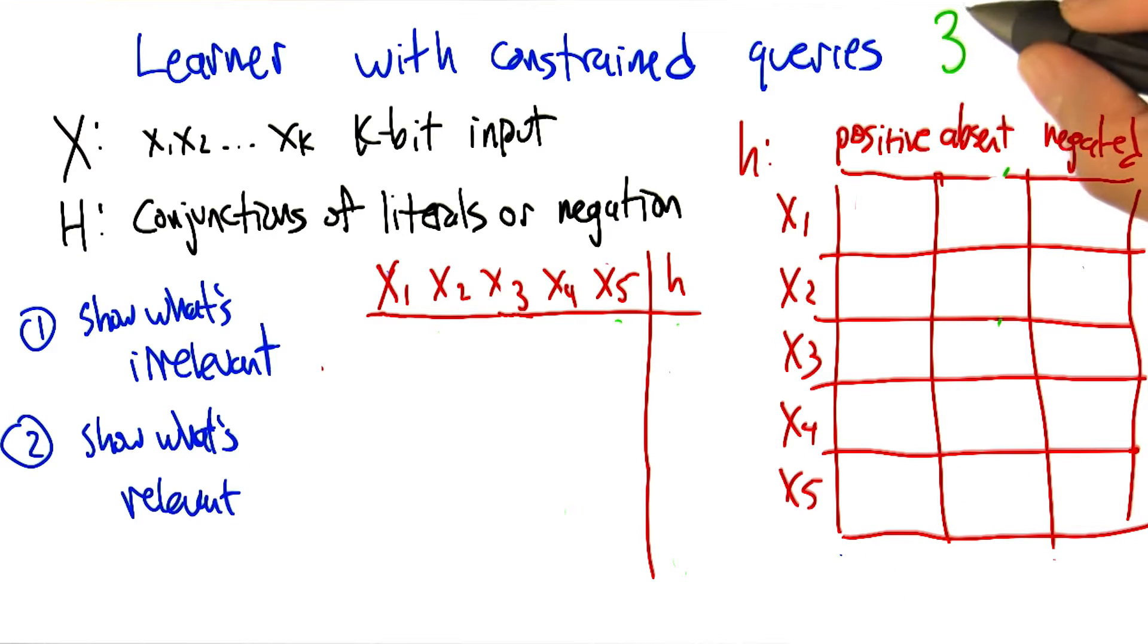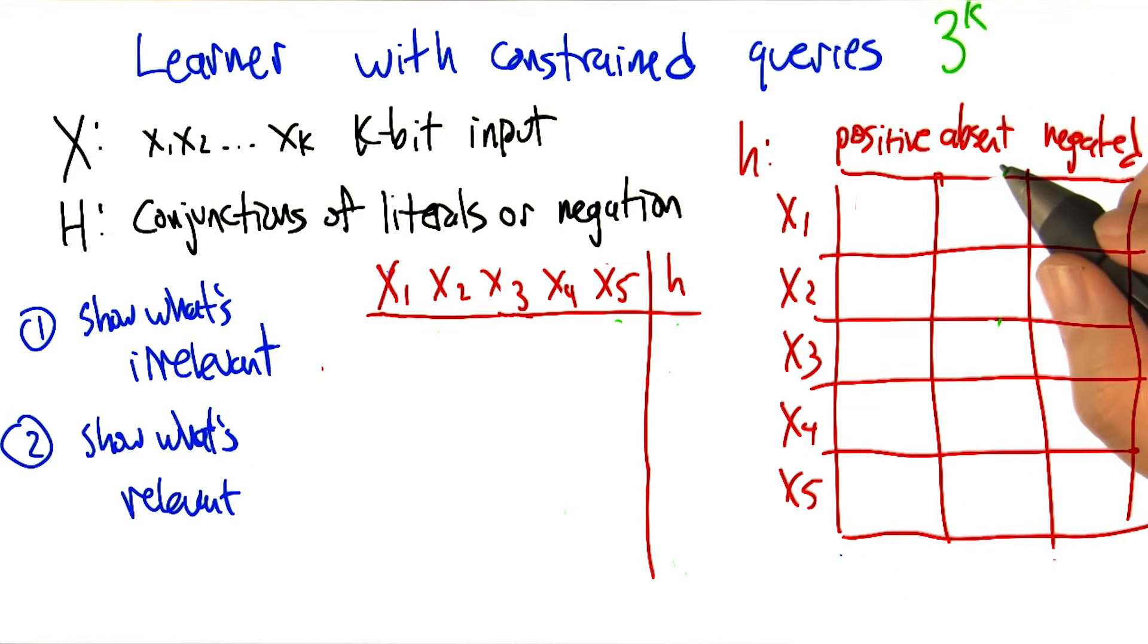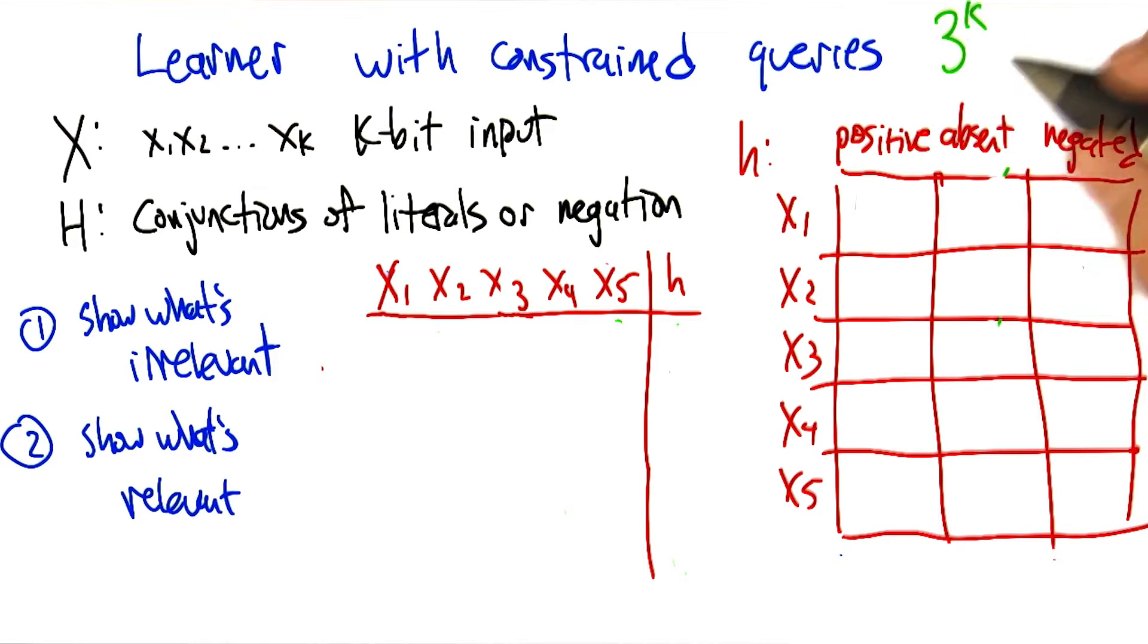So what could the learner do to try to learn about this? So again, remember that there are 3 to the k possible hypotheses, and if it could use the 20 questions trick, it could do this in log base 2 of 3 to the k, which is the same as k times log base 2 of 3, which is worse than what we had. But it's still linear in k.